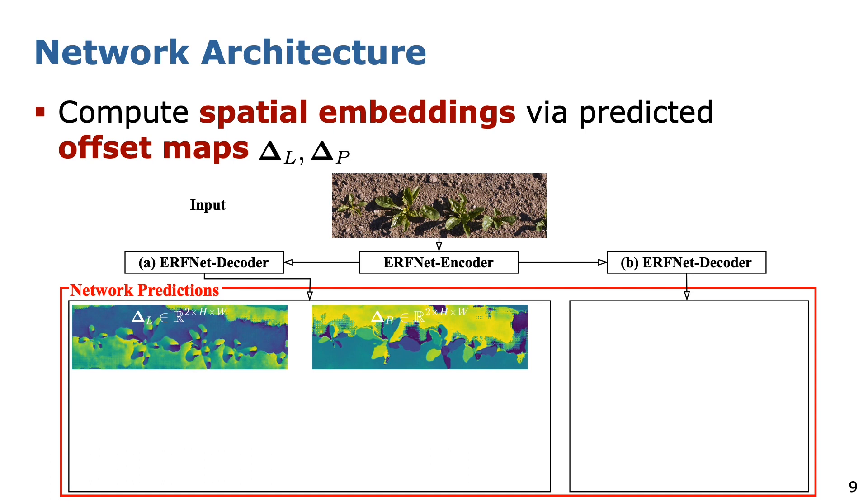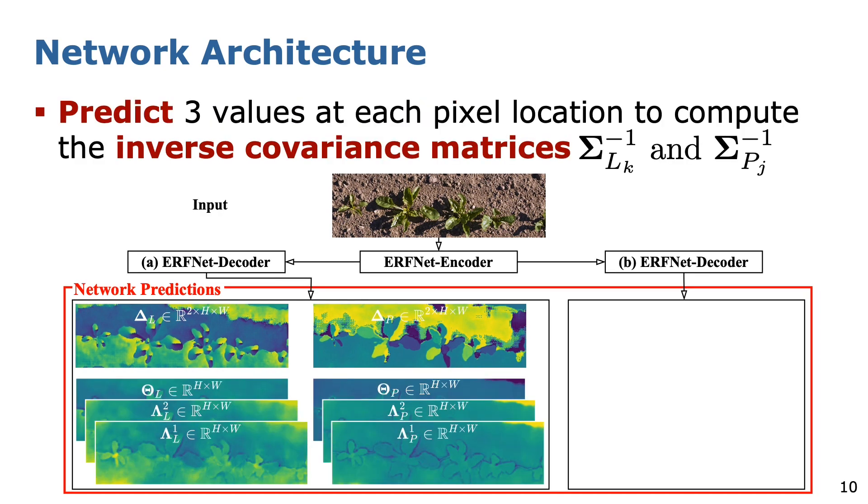The final network architecture is a branched U-net which shares an encoder and has two separated decoders. The left decoder predicts two feature volumes with two channels each. They represent the predicted offsets to translate pixel coordinates towards their associated leaf and plant instance center respectively. In addition, this decoder predicts three feature maps to compute instance-specific covariance matrices for each leaf which we apply to the previously mentioned Gaussian kernel.